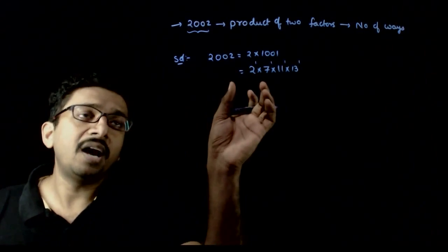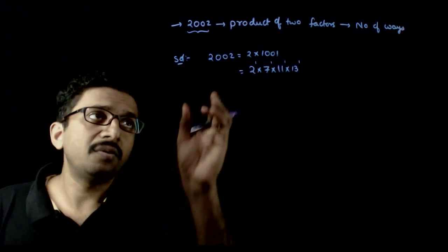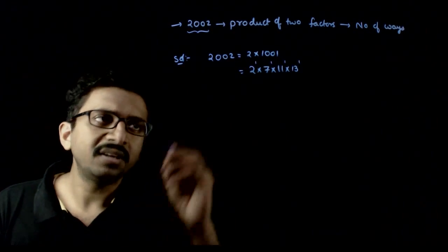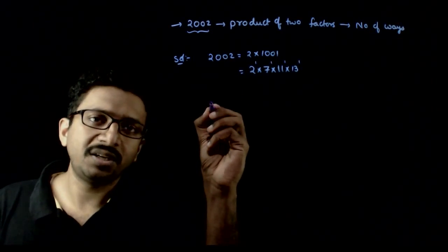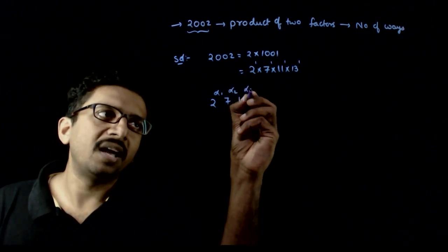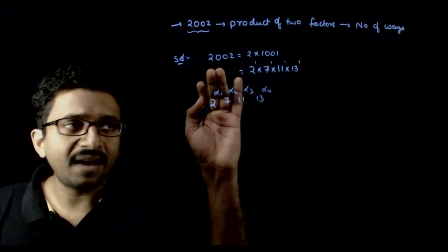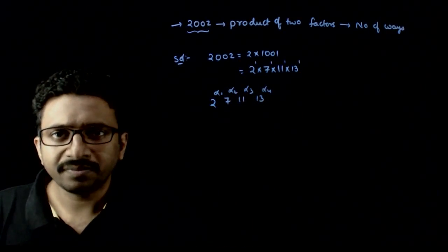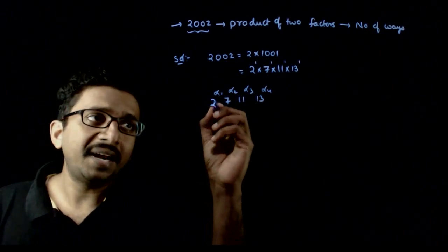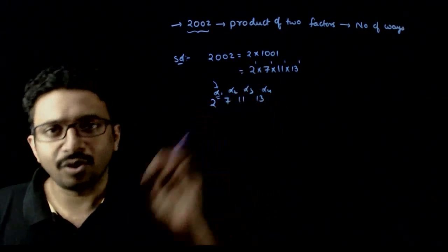Now the question is: in how many ways can you write 2002 as a product of two factors? First, how many factors does 2002 have? Any factor of 2002 is of the form 2 power alpha 1, 7 power alpha 2, 11 power alpha 3, 13 power alpha 4. The powers should not be more than the power present in the original number.